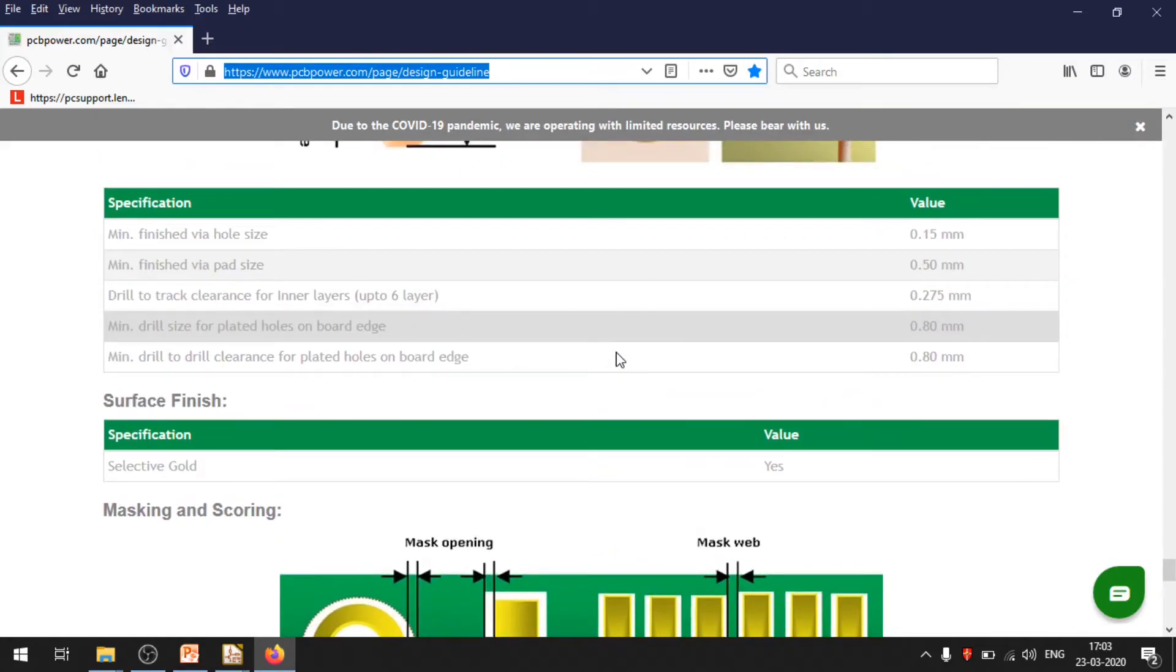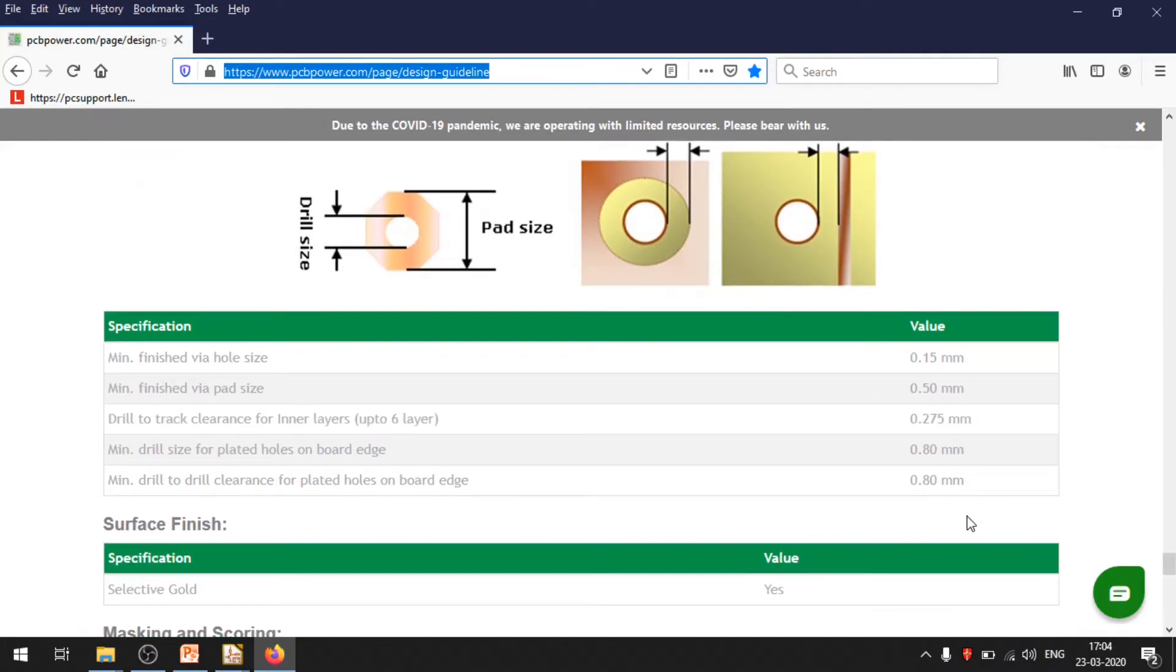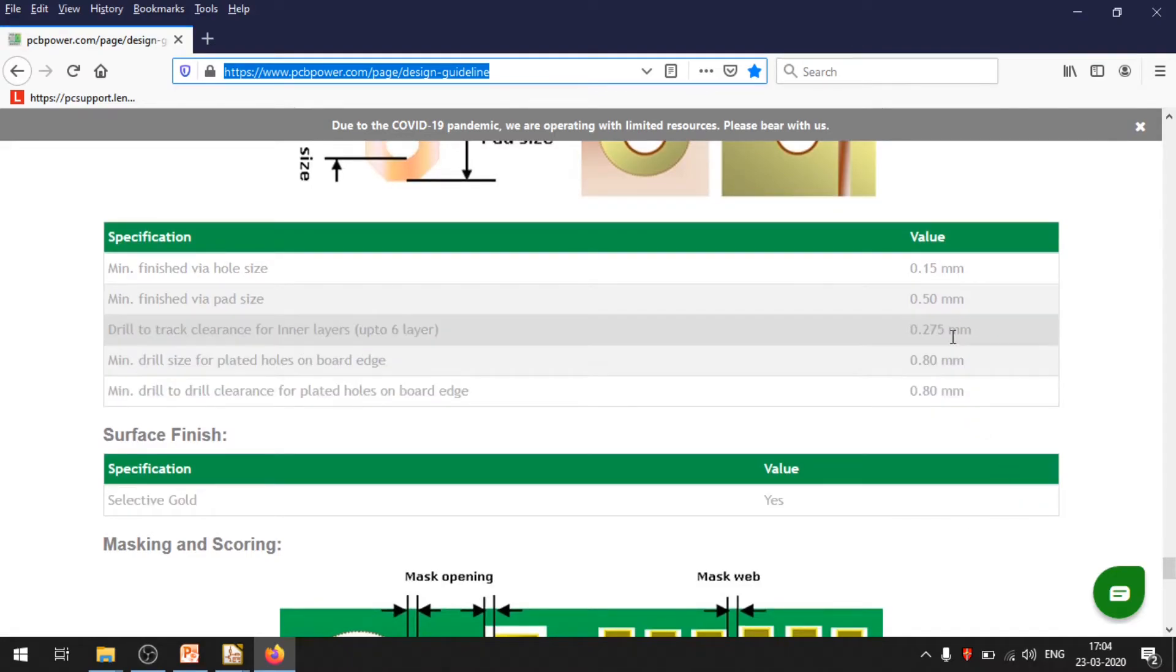Here before you, you can see there is a drill size that this manufacturer is looking for. The via hole size is 0.15. The minimum size that it can drill is 0.15 mm. Then the pad size here is shown. Then they are looking for the drill to track clearance. It can be either in this way drill to track clearance or in this manner. The copper clearance that they are looking for is 0.275 mm. That's the minimum. If you go below this, then they wouldn't be able to do it for you. This is what it means.